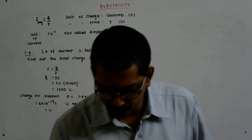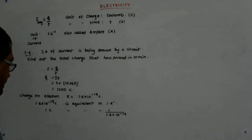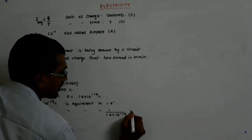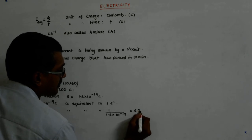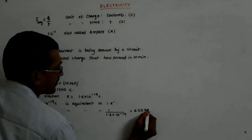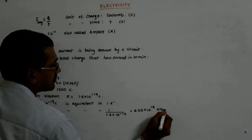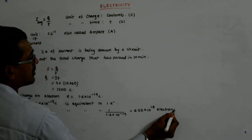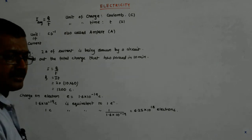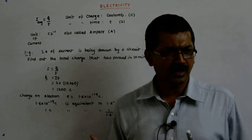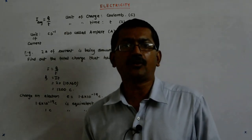It gives me 6.25 into 10 to the power 18 electrons. Now that's a huge number, 6.25 into 10 to the power 18 electrons. It is nothing like we know, see it's the billion, 1 billion is 10 to the power 9, so it is 6.25 billion billions.